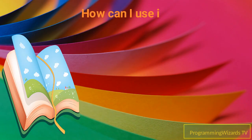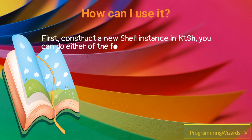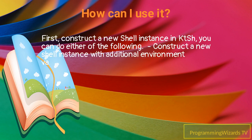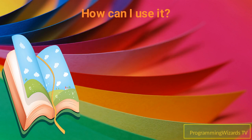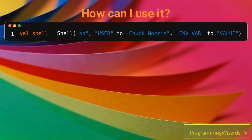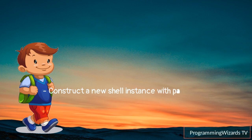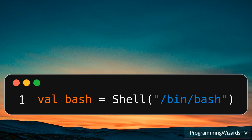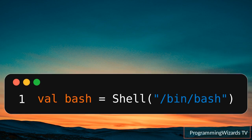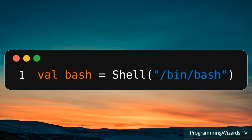How can I use it? First, construct a new shell instance in KTSH. You can do either of the following. Construct a new shell instance with additional environment variables using the appropriate constructor. If the shell doesn't exist, a shell.NotFoundException is thrown as a runtime exception.